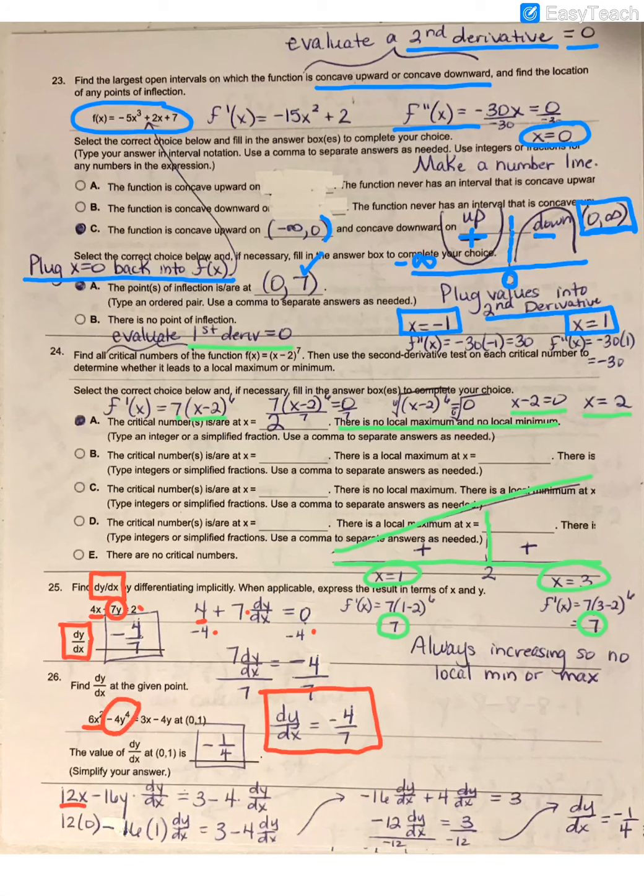When I take the derivative of negative 4y to the 4th, I get negative 16y cubed, but then I follow it with dy/dx. The derivative of 3x is simply 3. And when I take the derivative of negative 4y, I get a negative 4, but I follow it by dy/dx.